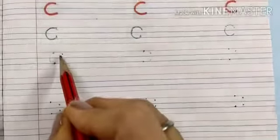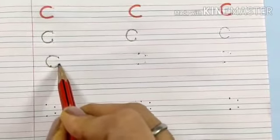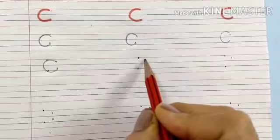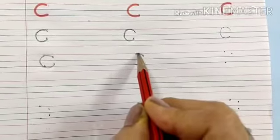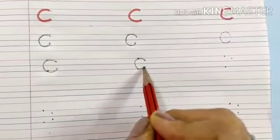And then, you have to make a C. Okay children. Like this, you have to make a C. Once again, starting from the middle of the red and blue line, touching the red line, touching the bottom line now, make a C.